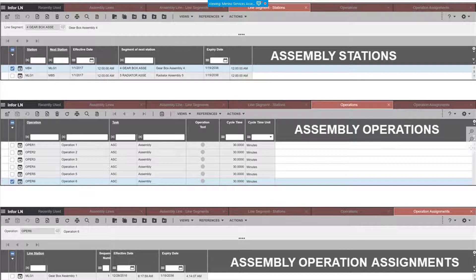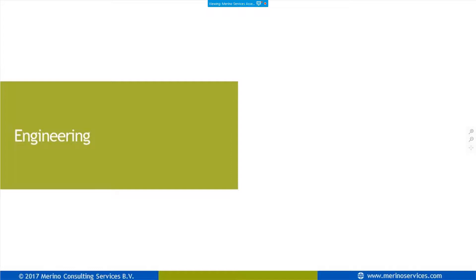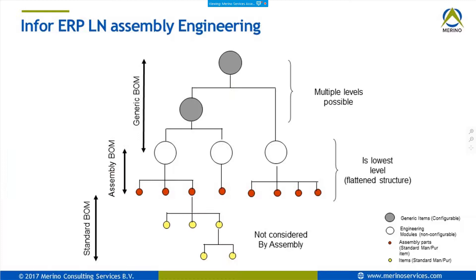Every line has a takt time — the speed at which it flows. Every station has its own cycle time: how long the work takes in that station. When we look at engineering — both product engineering and process engineering — a typical assembly product like a car, plane, or train has a top-level item: the car itself that I sell. The top-level item in the bill of material is my sellable item.